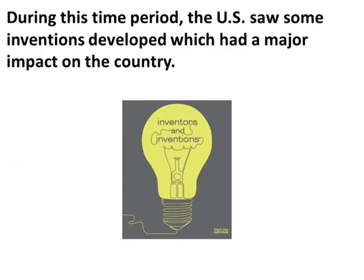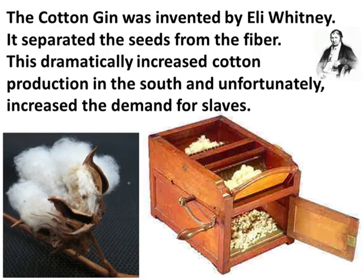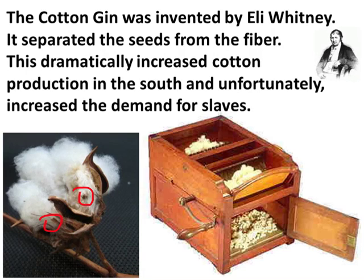During this time period, the United States saw inventions developed which had a major impact on the country. The cotton gin was invented by Eli Whitney — it separated the seeds from the fiber, dramatically increasing cotton production in the south and unfortunately increasing the demand for slaves. Before the cotton gin, seeds had to be removed by hand, a very slow process. With the cotton gin, you just dump the cotton fiber into the machine, turn the handle, and it automatically takes the seeds out.